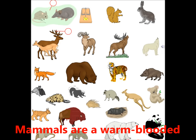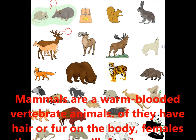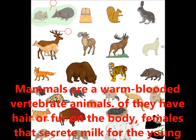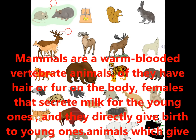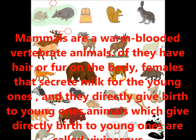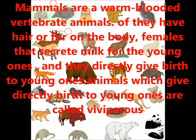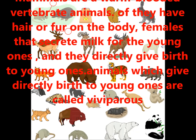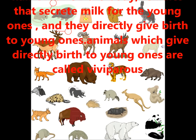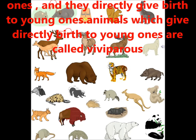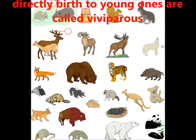Mammals are warm-blooded vertebrate animals, distinguished by the presence of hair or fur on the body. Females secrete milk for the nourishment of young ones, and they directly give birth to young ones. In this lesson, we learned about animals that live in different places with different kinds of movements and sounds in nature.